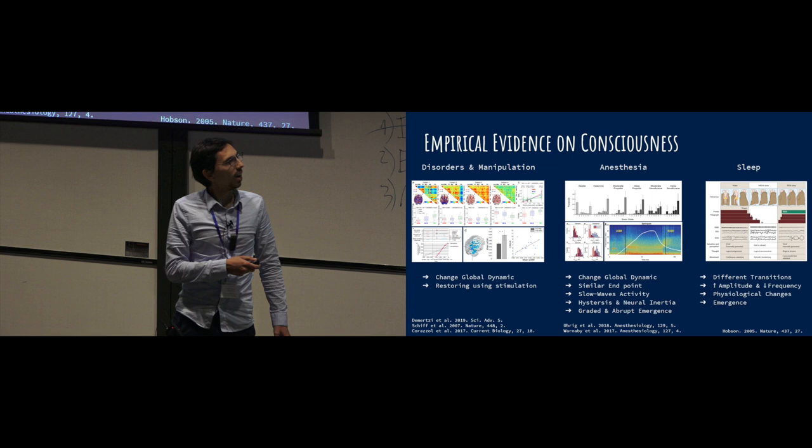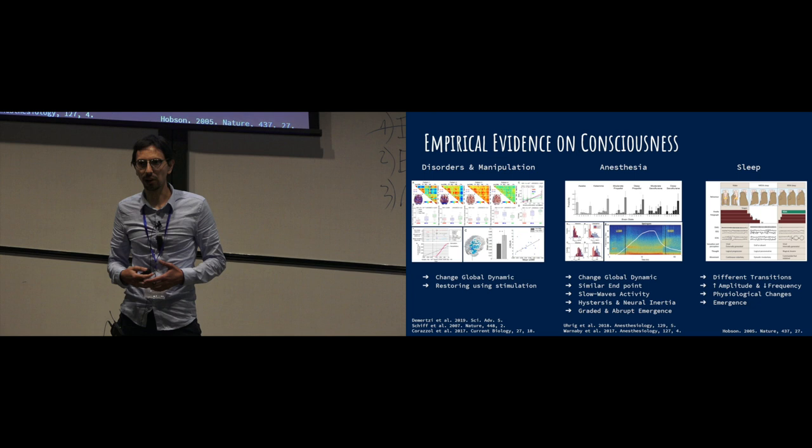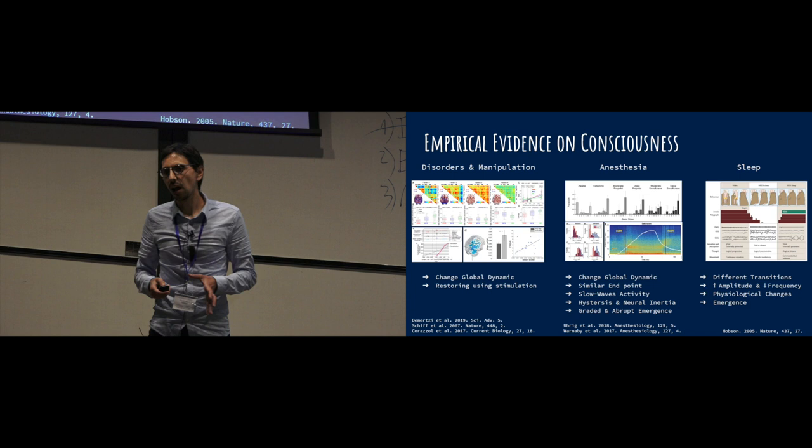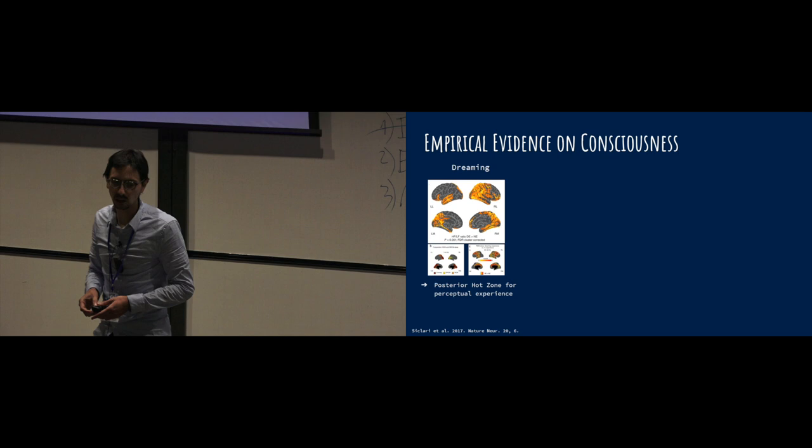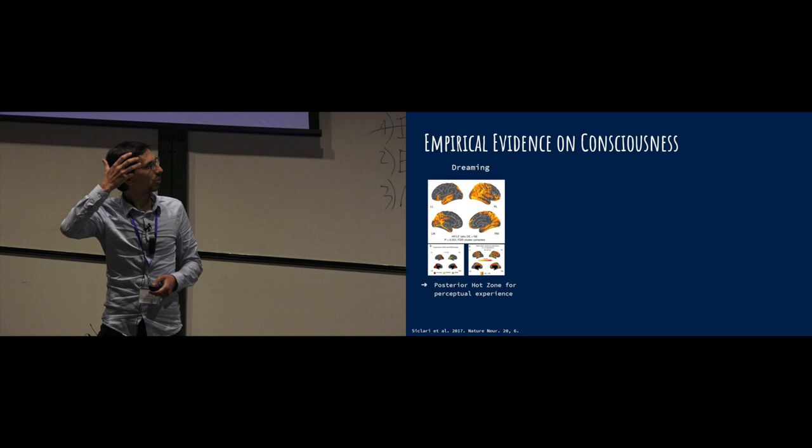During sleep, you also see different physiological changes, different dynamic transitions. But these transitions are more natural and are more gradual. For example, if you see what happens when you are dreaming, you have a correlation of activity in the parietal occipital cortex, which is the middle back of your brain.